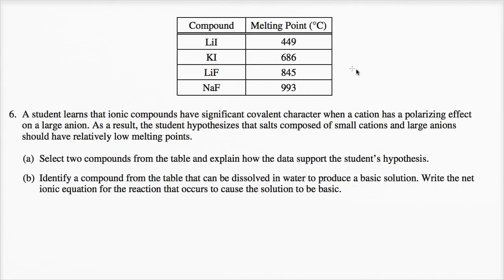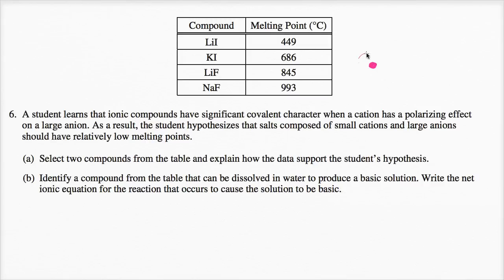So what are they talking about? If I have a cation — this is my cation — it still has electrons. You have the nucleus of your cation, you have your electron cloud right over here. But you have fewer electrons than you have protons, so you're going to have a positive charge, and that's why we call it a cation.